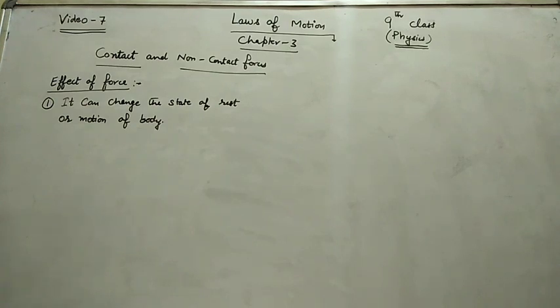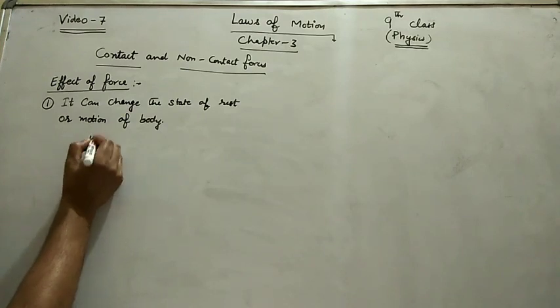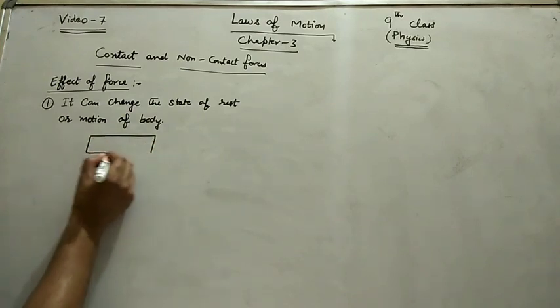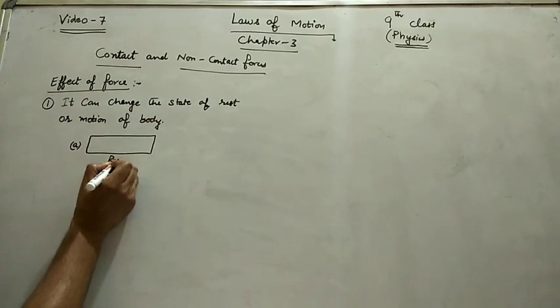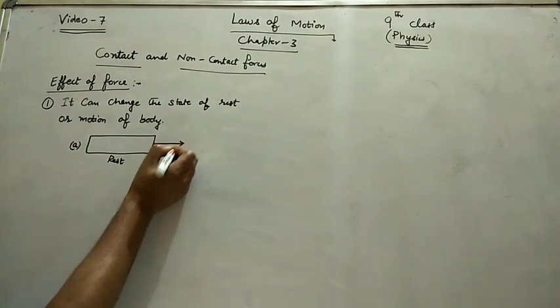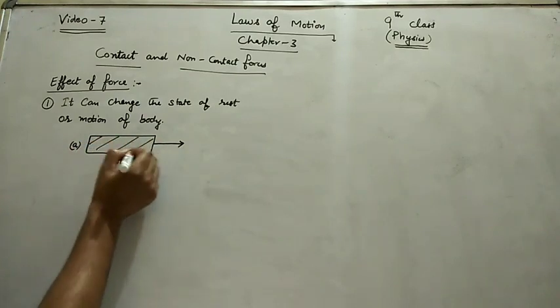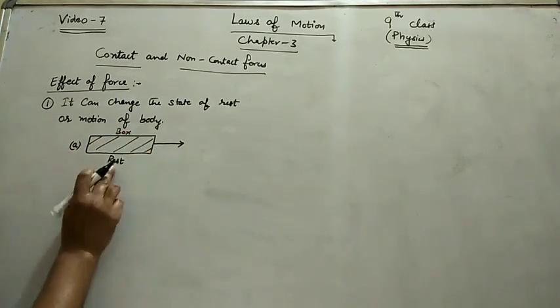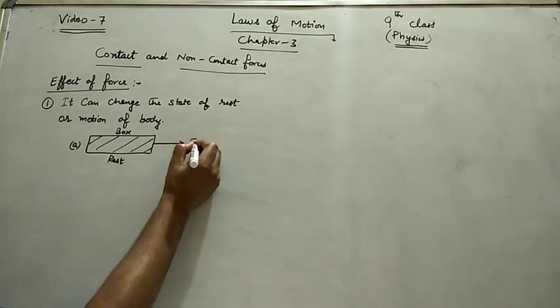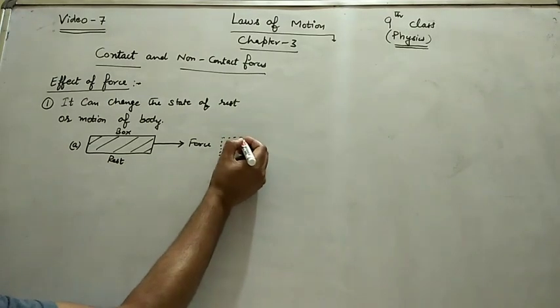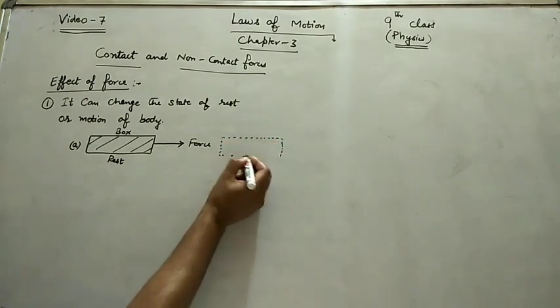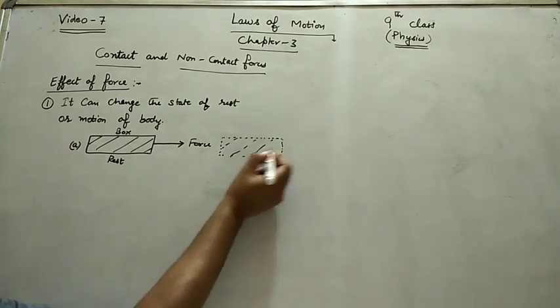For example, suppose this is a box. It is initially at rest. If I will pull it, so this box which is initially at rest will change its position. So this can be the new position of the box. Same box, but now it is in motion, moving with velocity V.